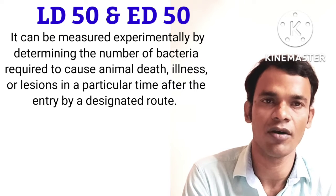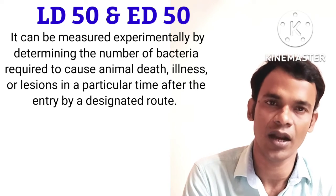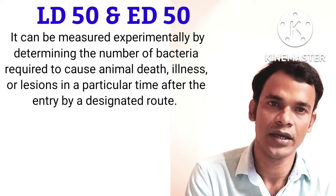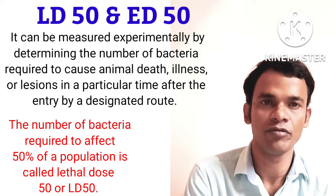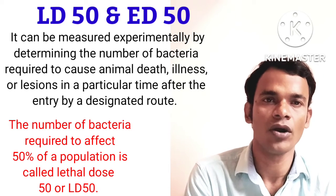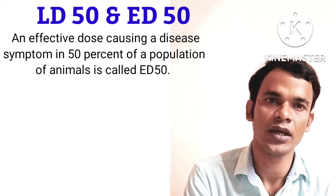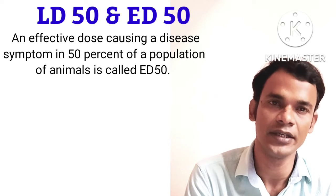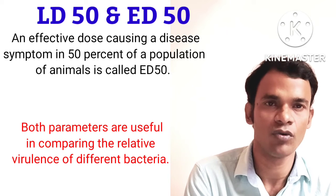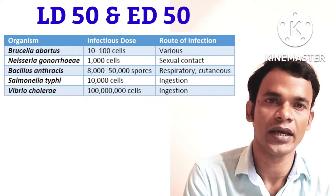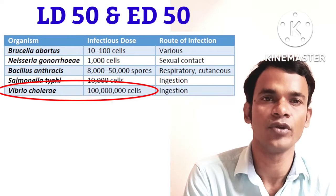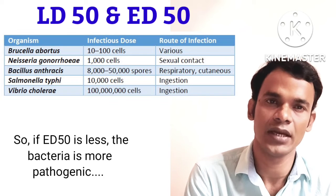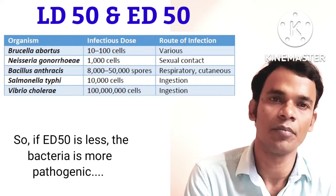Several microbial factors are responsible for disease progression, like infectious dose 50, or ID50. Virulence can be measured experimentally by determining the number of bacteria required to cause animal death, illness, or lesion in a particular time after entry by a designated route. The number required to kill 50% of a population is called lethal dose 50, or LD50. An effective dose causing disease symptoms in 50% of a population is called ED50. Both parameters compare relative virulence. For example, brucellosis requires only 10 to 100 bacteria to initiate infection, whereas Vibrio requires far more. If ED50 is less, the bacteria is more pathogenic.